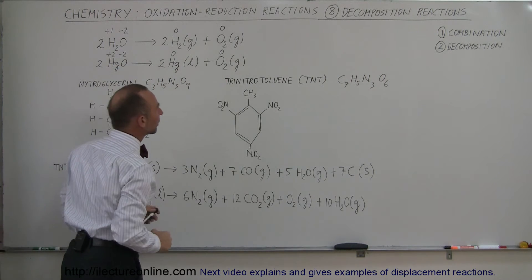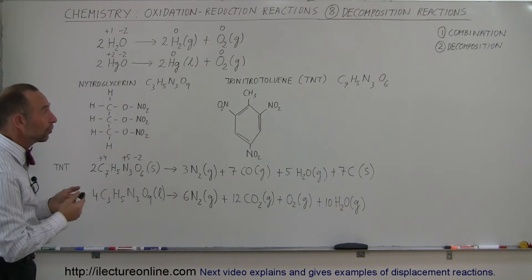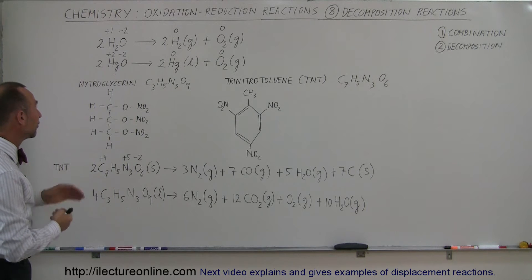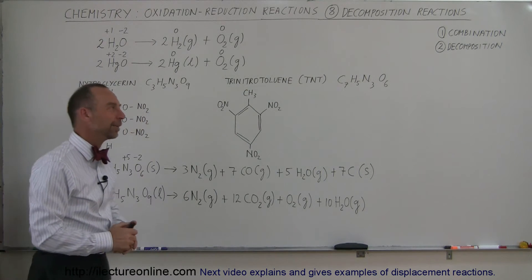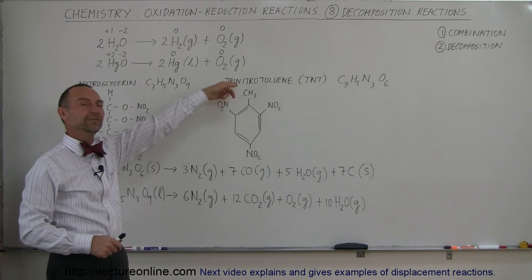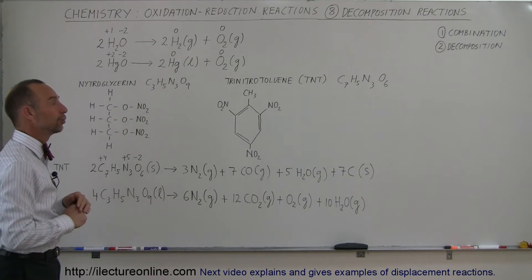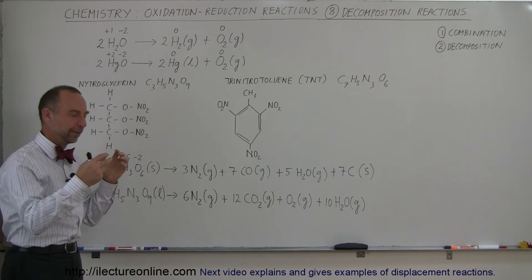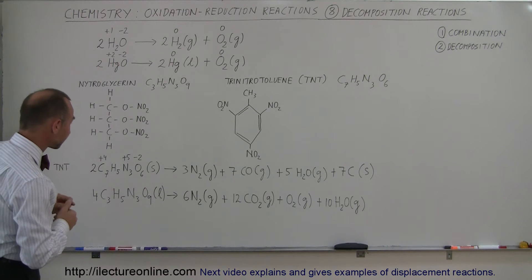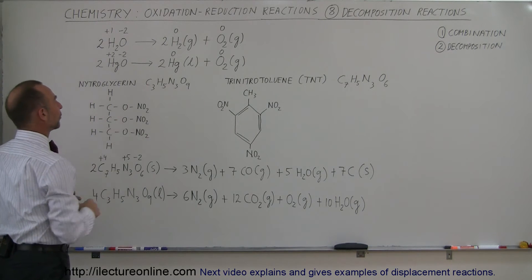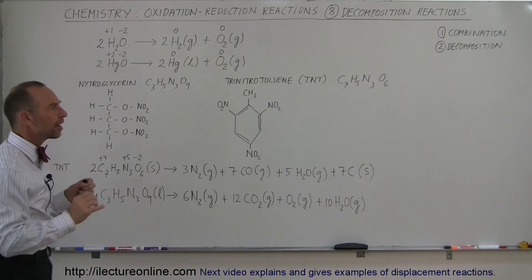Some interesting oxidation-reduction reactions that are also decomposition reactions are those involving nitroglycerin and trinitrotoluene, also known as TNT or dynamite. This is what made Nobel very rich because he got the patent on using trinitrotoluene by infusing it into an inert substance and using it as dynamite sticks. Here you can see the chemical formula for nitroglycerin and the chemical formula for TNT. Notice they both have a lot of oxygen in them.